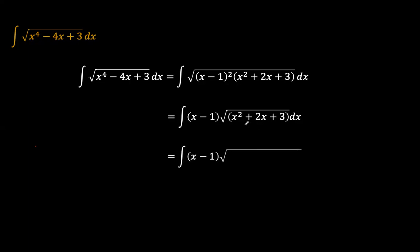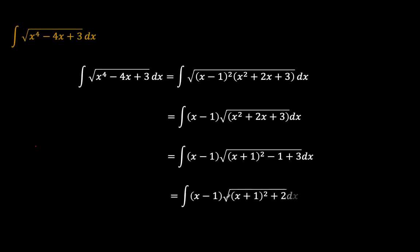The next thing we do is express this as a perfect square. You look at the 2 here, and that means it derives from (x plus 1) squared. Now you can subtract the product, which is minus 1, but keep the constant, so you are left with (x minus 1) times the square root of (x plus 1) squared plus 2 as our integrand.